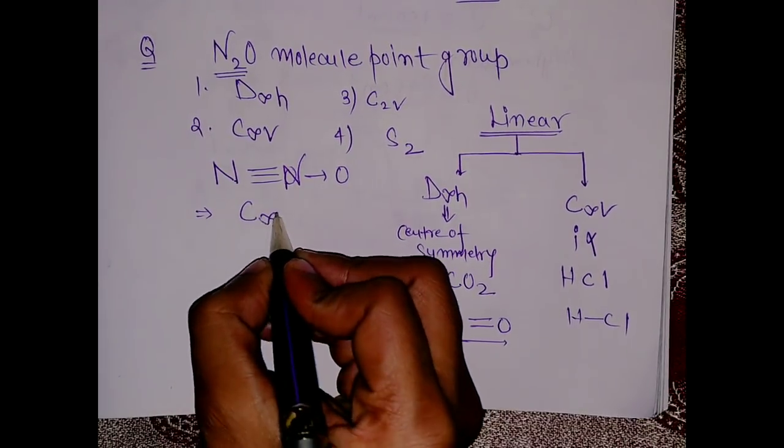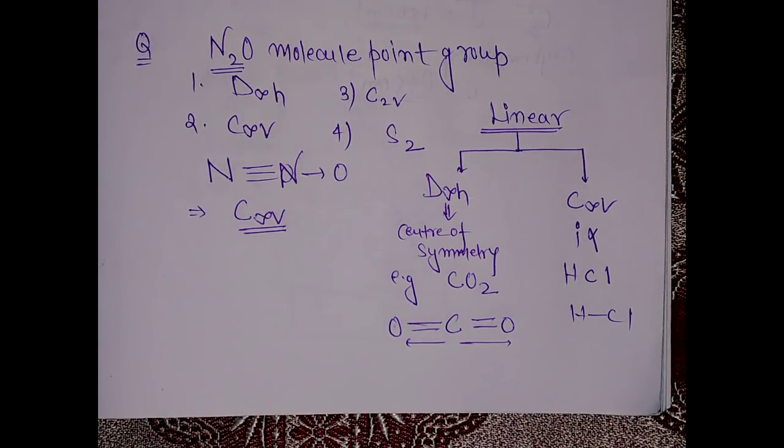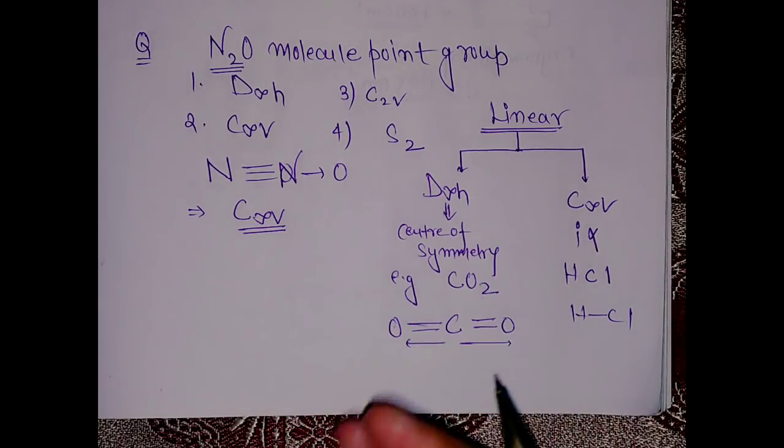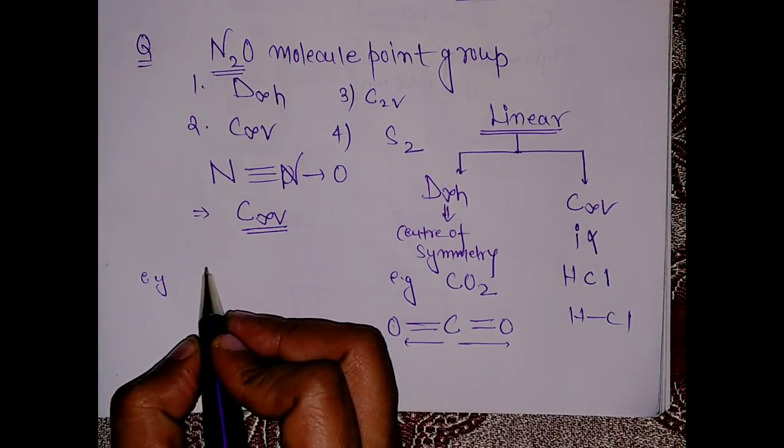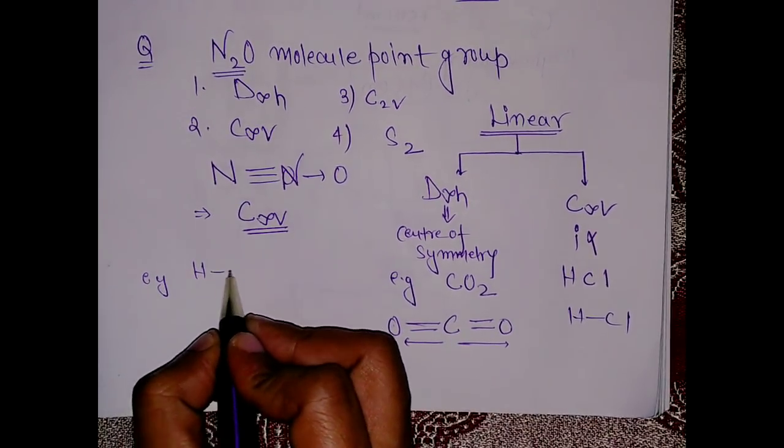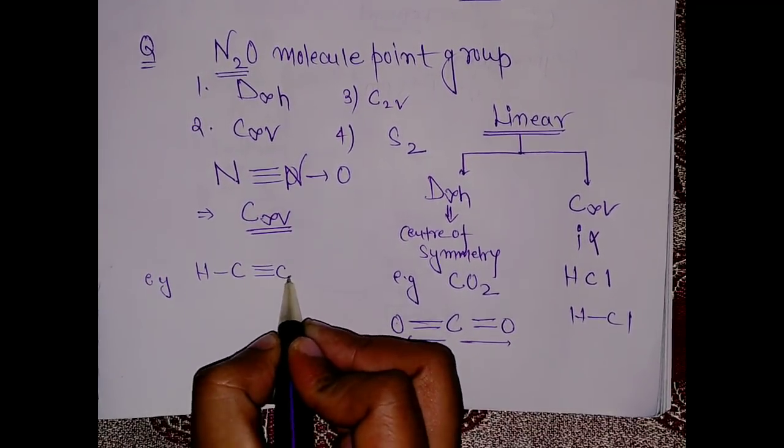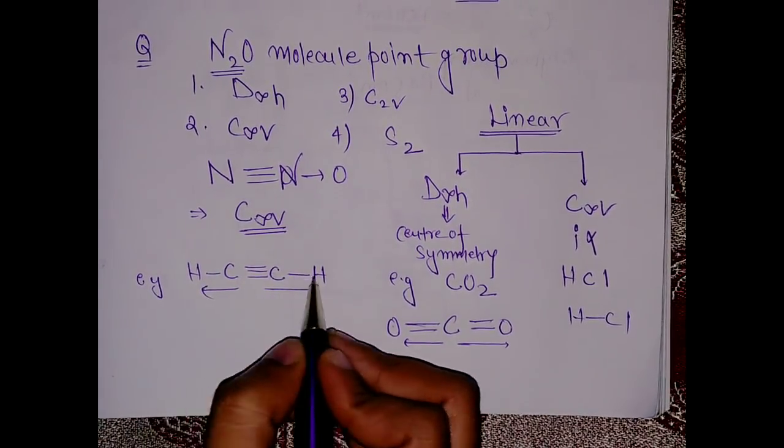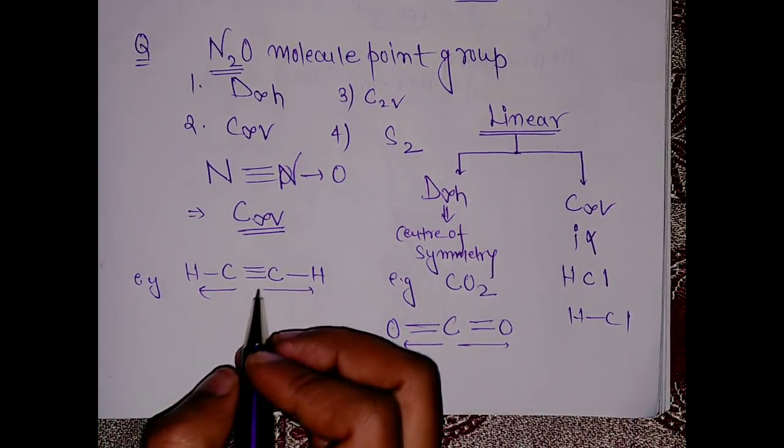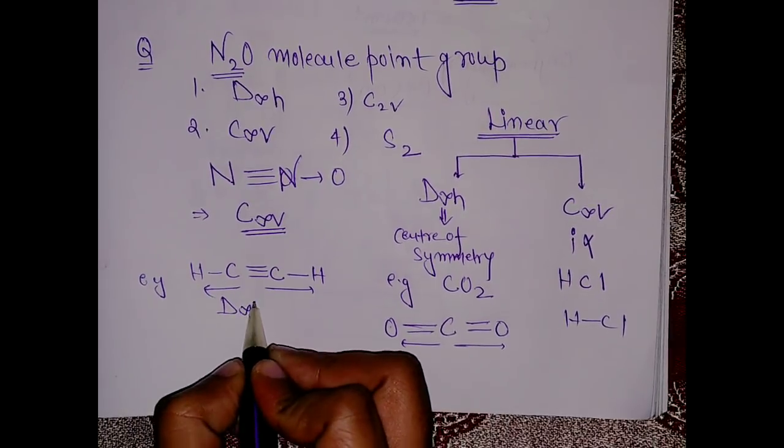Let's say I have an example. Let's say we have acetylene. Acetylene is your H-C triple bond C-H. As you can see, there is a center of symmetry - same atoms on the opposite sides. That means the point group will be D∞h.